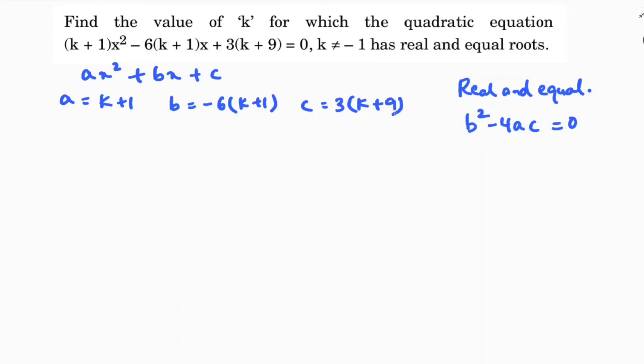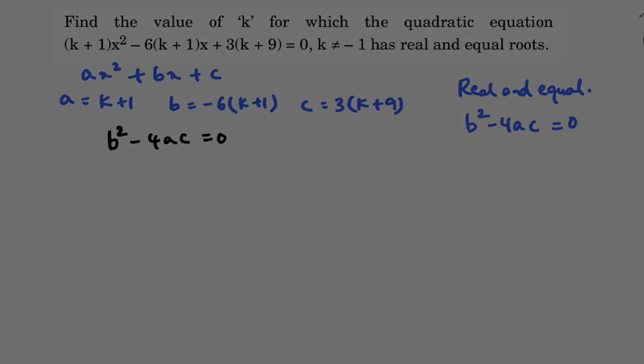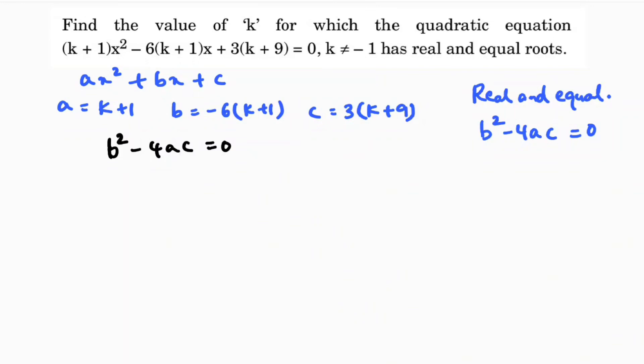Now, b² - 4ac = 0 becomes [-6(k+1)]² - 4(k+1)(3)(k+9) = 0. This simplifies to 36(k+1)² - 12(k+1)(k+9) = 0.